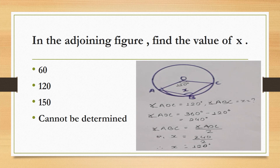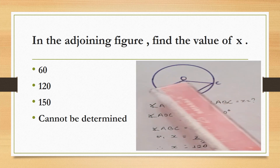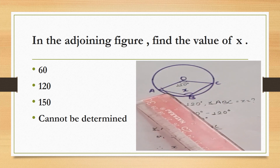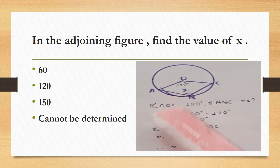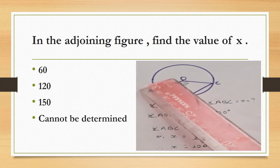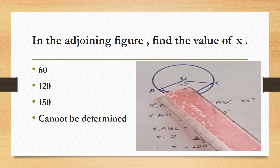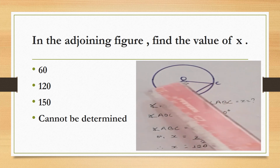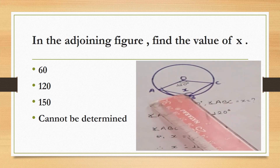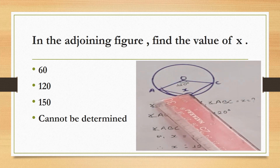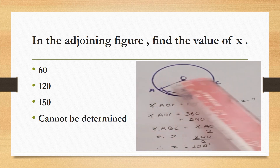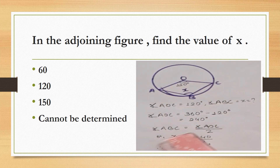In the adjoining figure, find the value of x. Angle AOC is 120 degrees. The reflex angle AOC is 360 minus 120, which equals 240 degrees. The inscribed angle ABC, which is x, stands on the same arc. The inscribed angle is half of the central angle, so x equals 240 by 2, which is 120 degrees.